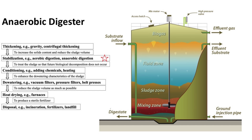Sludge handling involves several steps to reduce its volume and prepare it for disposal or reuse. First, thickening reduces the water content of sludge to decrease its volume before further processing. Common methods include gravity thickening and dissolved air flotation.